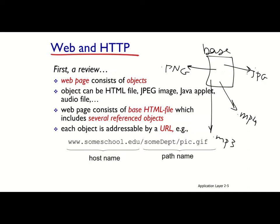Each of these objects in a web page has a unique URL, so they are addressable. A URL starts with a host name — the host name is similar to an IP address but is more human-friendly, while an IP address with its 32 bits of numbers is more preferable for machines. After the host name we have the path name in the URL. For example, a GIF file might be at some-department/pic.gif.